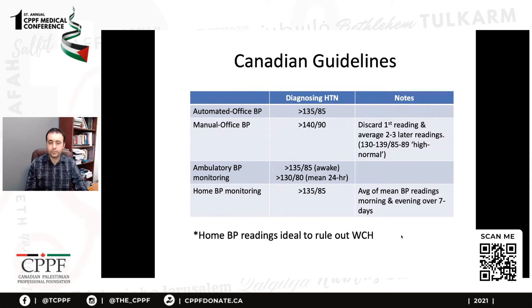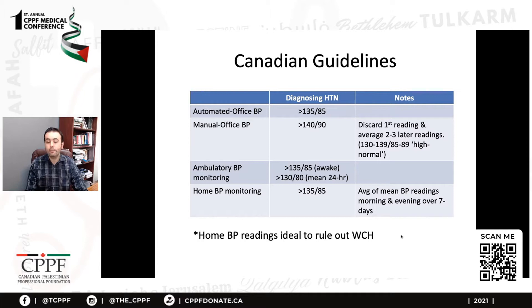It's important to remember that when we're talking about hypertension, it all depends on how you're measuring blood pressure and in what context. For automated office blood pressures, the diagnosis of hypertension is more than 135 over 85. For manual office blood pressure, the Canadian guidelines say it's more than 140 over 90. For ambulatory blood pressure monitoring, if you're using the mean while awake it's 135 over 85, and if it's the mean 24-hour it's 130 over 80. For home blood pressure monitoring with an automated monitor, it's 135 over 85.